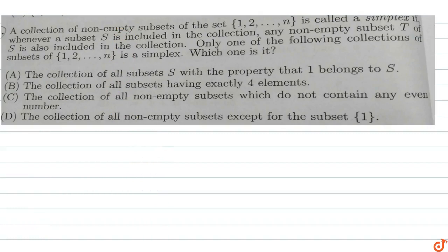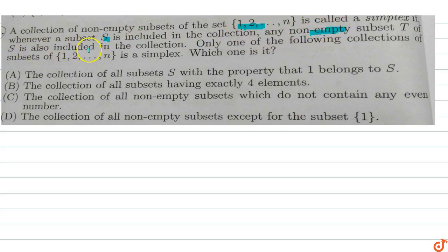In this question, a collection of non-empty subsets of the set {1, 2, 3, 4, ..., n} is called a simplex if whenever a subset S is included in the collection, any non-empty subset T of S is also included in the collection. Only one of the following collections of subsets of {1, 2, 3, ..., n} is a simplex.